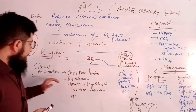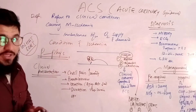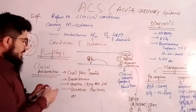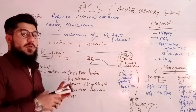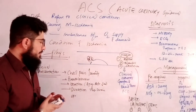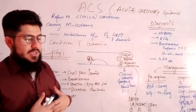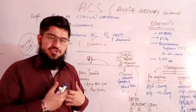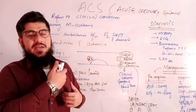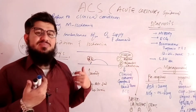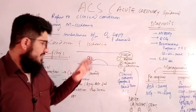Now let's come towards the clinical presentation of ACS. The patient will feel chest pain of a severe type, which will be radiating from the chest to the neck, jaw, back, arm, etc.